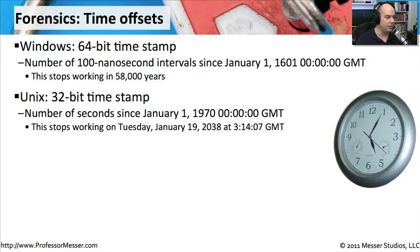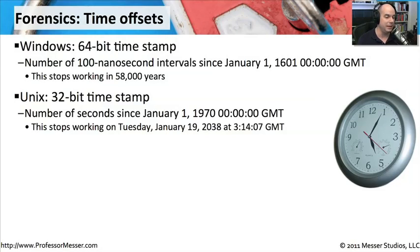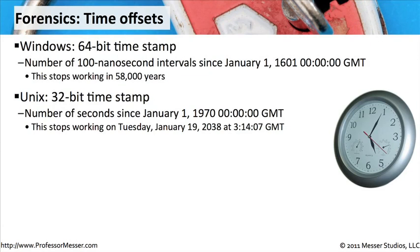In Unix or Linux, we have a 32-bit timestamp to deal with. This recognizes the number of seconds that have occurred since January 1st of 1970 at zero GMT. This is a 32-bit timestamp, which means it's going to stop working soon — on Tuesday, January 19, 2038. If you remember the Y2K type problems, this is more like Y2K plus another 38 years. It will stop working at 3:14:07 GMT on that day.